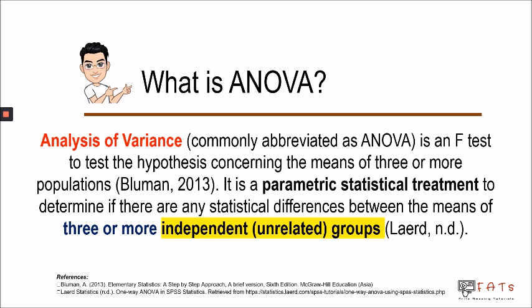ANOVA is a parametric statistical treatment to determine if there are any statistical differences between the means of three or more independent or unrelated groups. We can say that ANOVA is the extended version of the independent t-test for three or more independent groups.